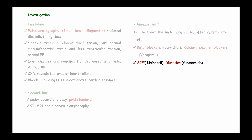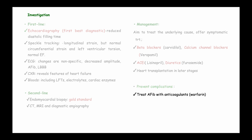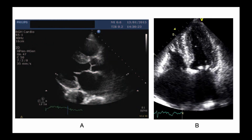It is important to note that ACE inhibitors may not be given in amyloidosis. Heart transplant may be considered in the later stages of the condition. To prevent complications from atrial fibrillation, anticoagulation such as warfarin must be given unless contraindicated, due to the risk of thromboembolism. The prognosis of restrictive cardiomyopathy is poor, especially for amyloidosis.